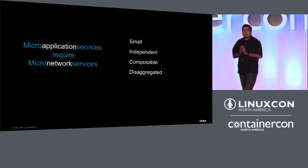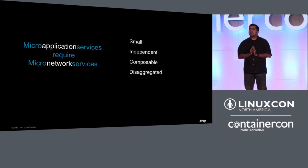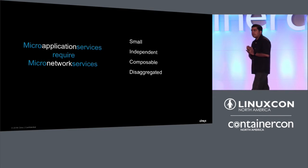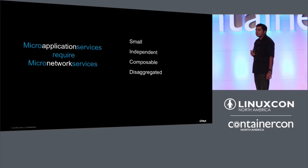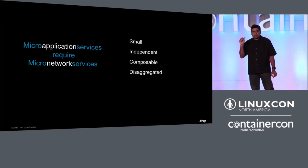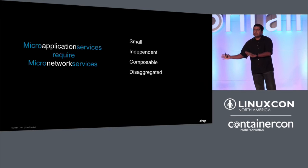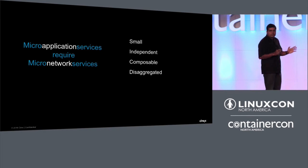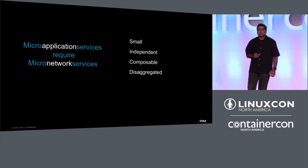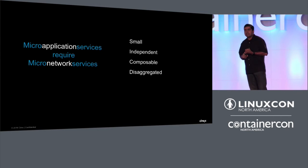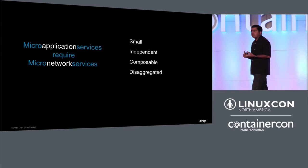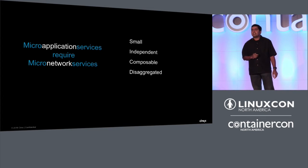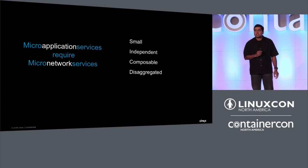The obvious thing to me and you is that in order to be a networking component for microservices, the network has to be in software itself. The way I say it is: micro-application services require micro-network services to support them. If the application went from monolithic to micro, the network will have to follow the same route. You expect the network to also be small, independent, composable, and disaggregated — just like the microservices themselves.